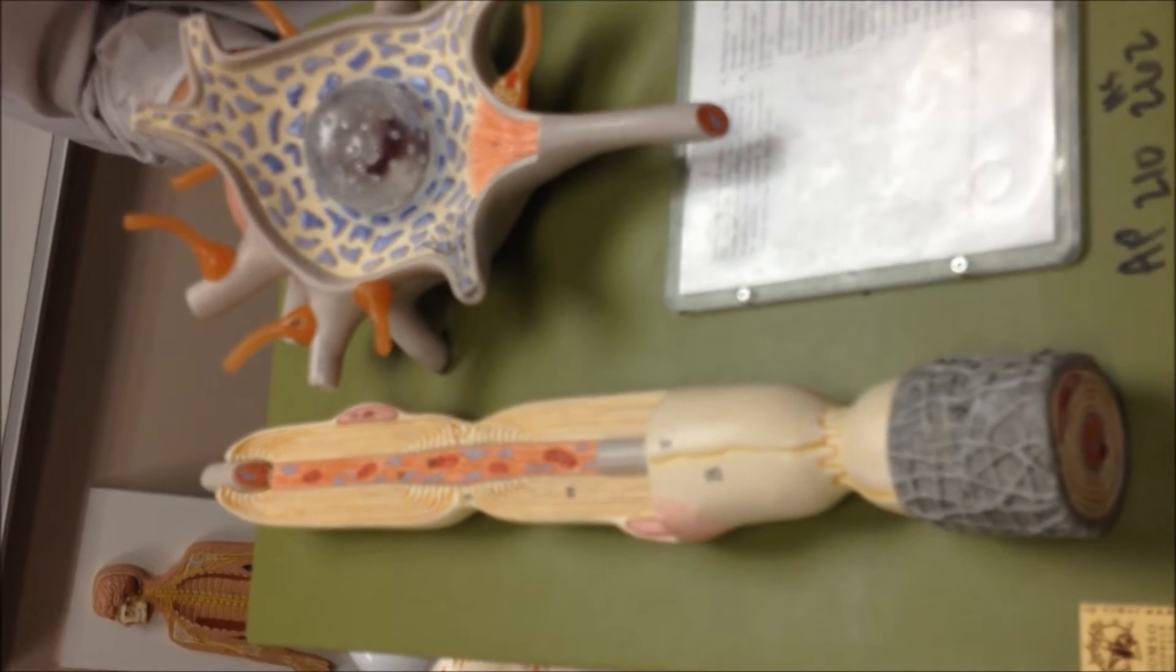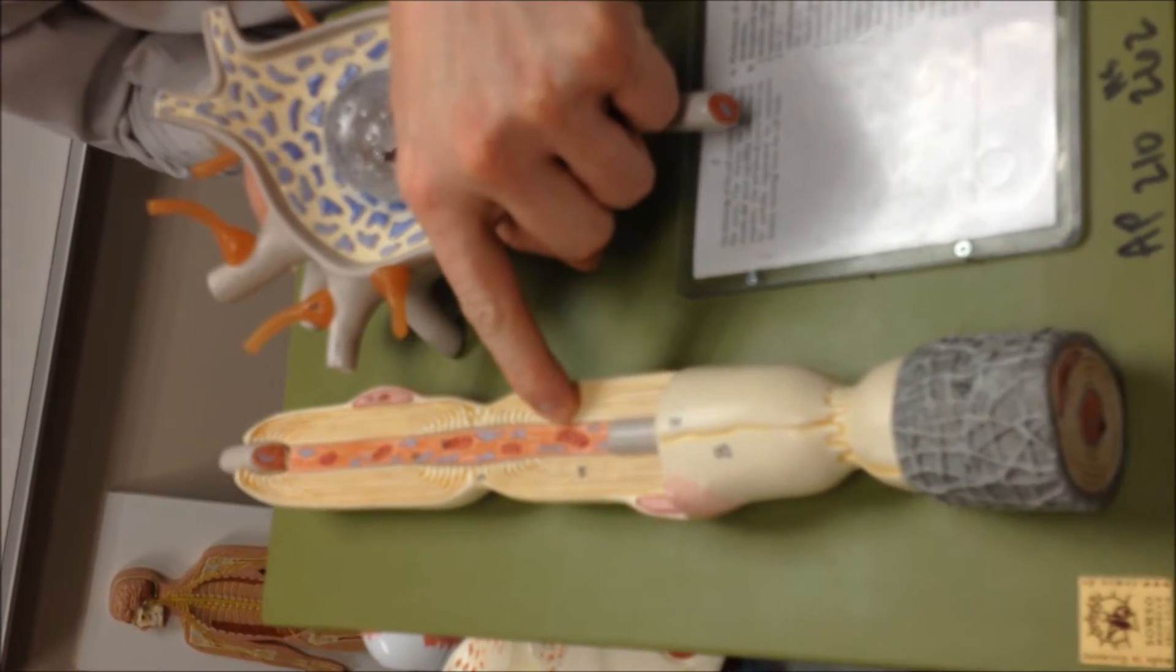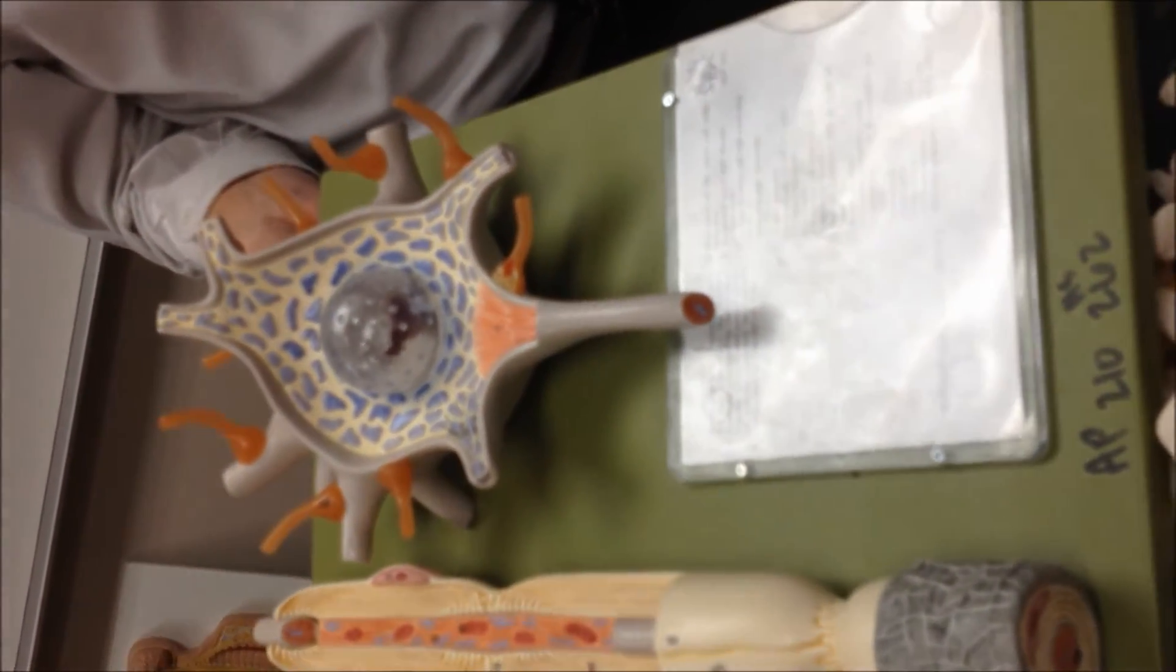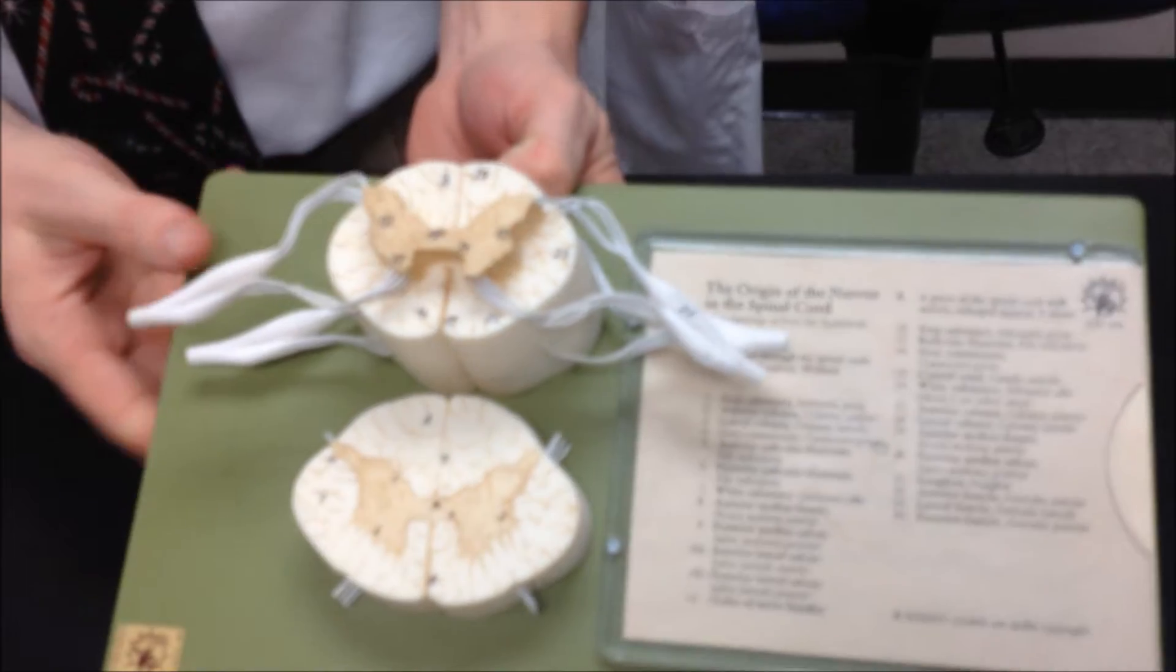And then the little pink things were the nucleus? No. Oh, that's the nucleus of the Schwann cell. Okay. That's what I thought you said. I just wanted to make sure.